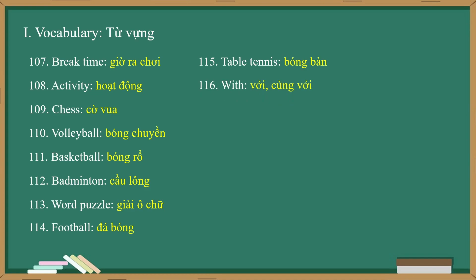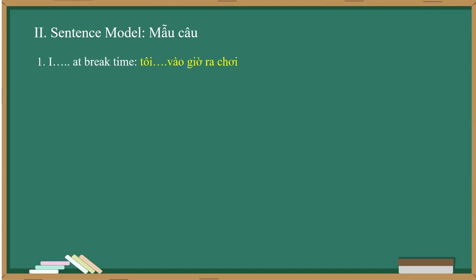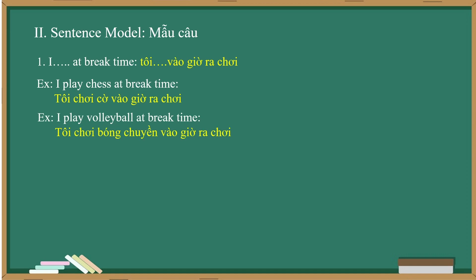With. Do. Sentence Model: I [activity] at break time. I play chess at break time. I play volleyball at break time.